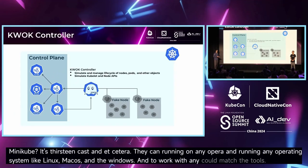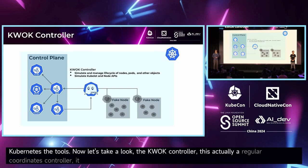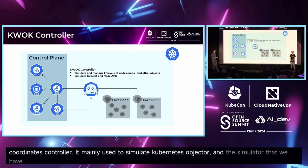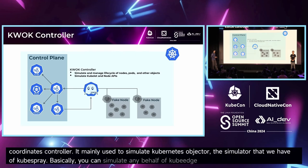Now let's take a look at the Quark controller. This is actually a regular Kubernetes controller. It's mainly used to simulate Kubernetes objects and simulate the behavior of Kubernetes. Basically, you can simulate any behavior of Kubernetes. This is great for testing scheduling and large-scale clusters. You don't need a real Kubernetes cluster.